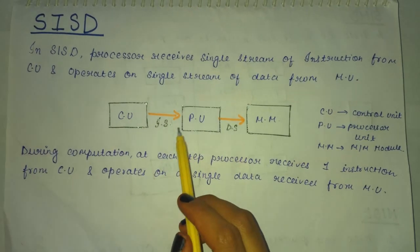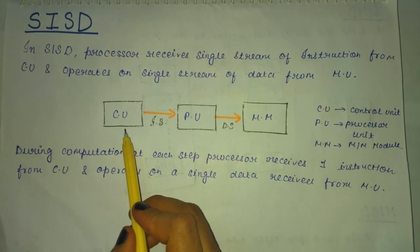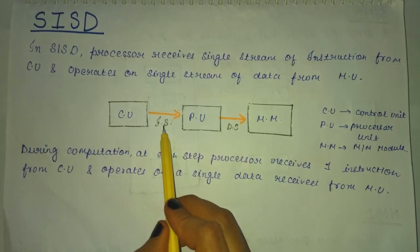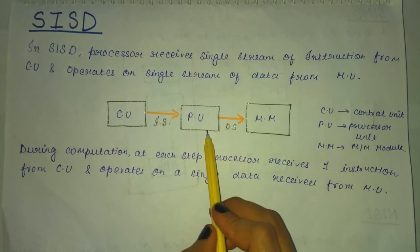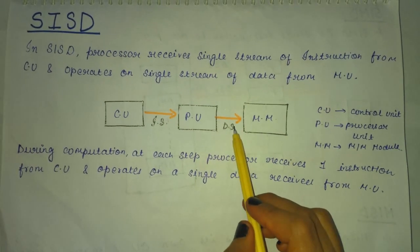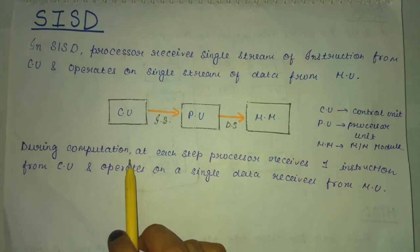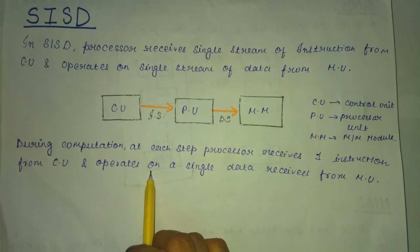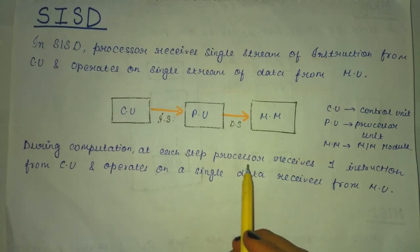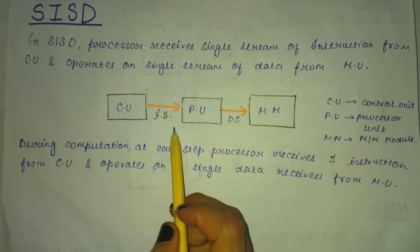Here CU is the control unit and MU is the memory unit. As you can see in the figure, CU sends instruction stream to the PU which is the processing unit and from this data stream is sent to the memory module where the computation is done. During computation at each step, processor receives one instruction from CU and operates on a single data from MU.